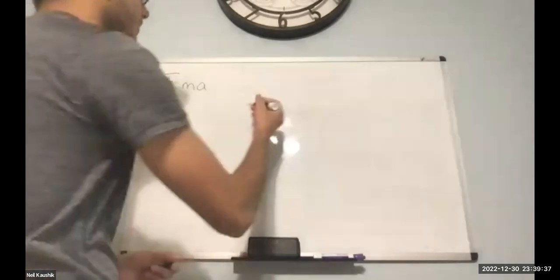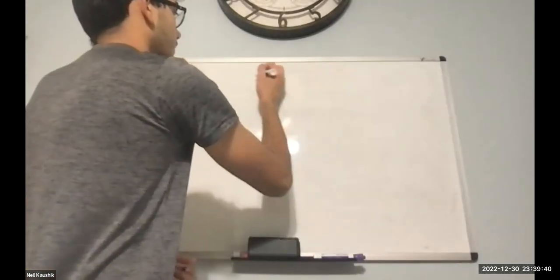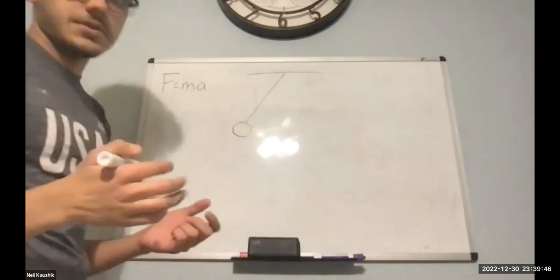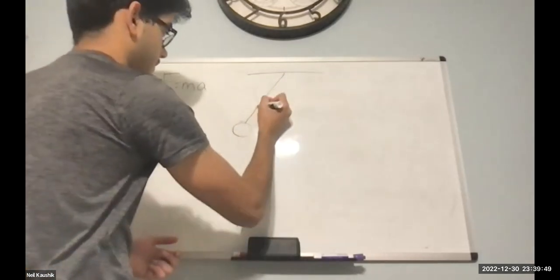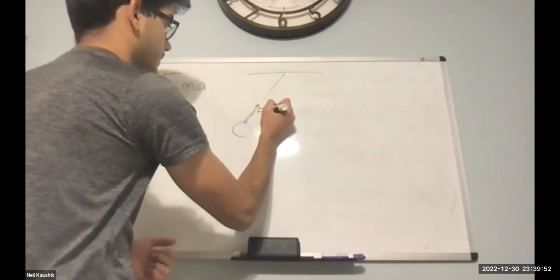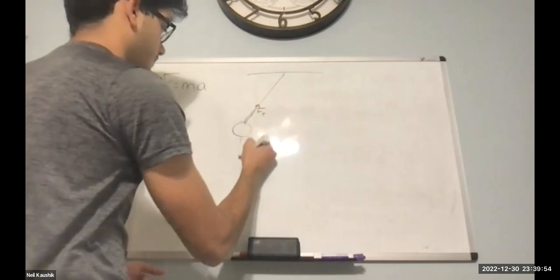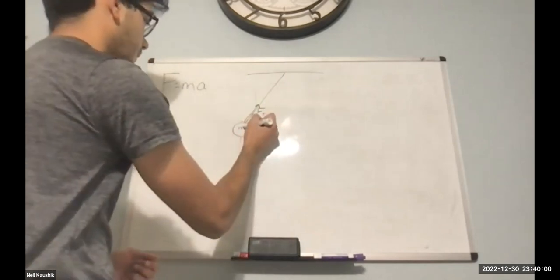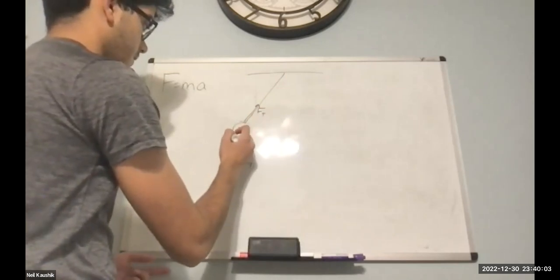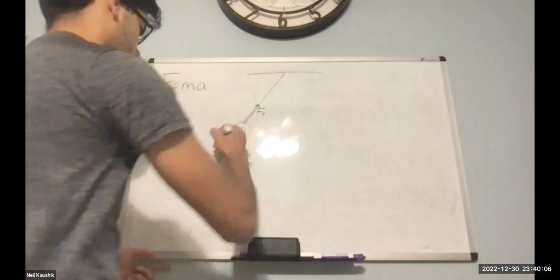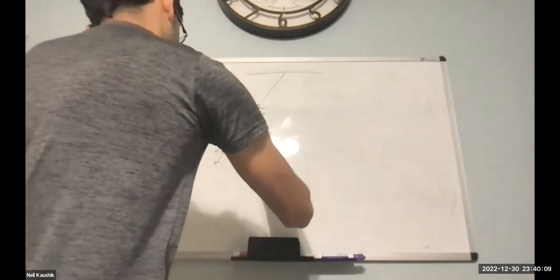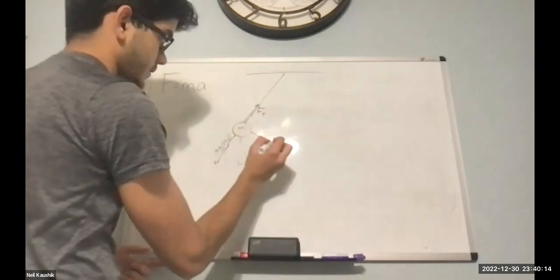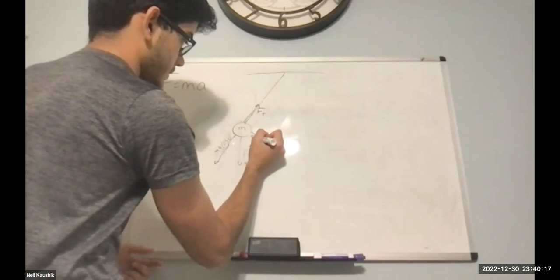I'm just going to draw a simple pendulum to start it off. From right here, I'm going to show the forces. We have tension coming in this direction, and then we have force of gravity, or just mg, for whatever mass there was. And then here we have mg cosine theta.